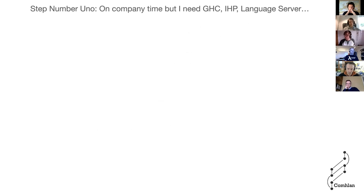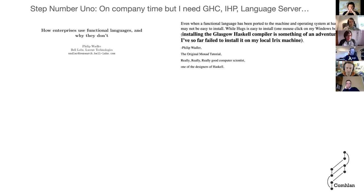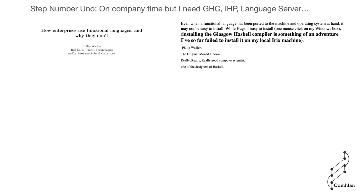The first thing we need to do to get our application up and running is create our development environment. The compiler we want is probably GHC, we want the IHP framework, and you might want language server support. I was reminded of a paper by Philip Wadler titled 'How Enterprises Use Functional Languages and Why They Don't,' where he says installing the Glasgow Haskell Compiler is 'something of an adventure' — he'd so far failed to install it on his local IRIX machine.